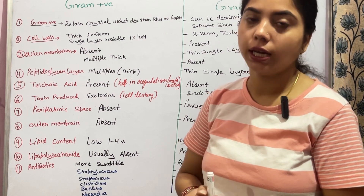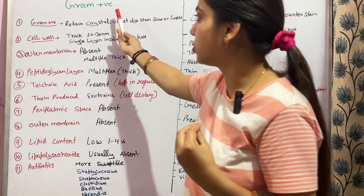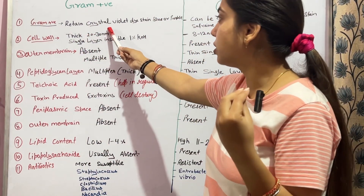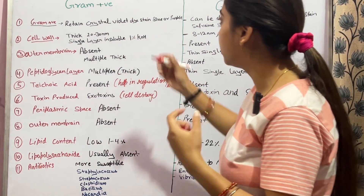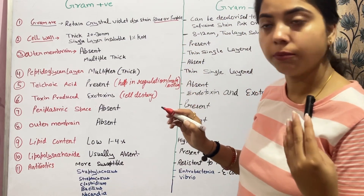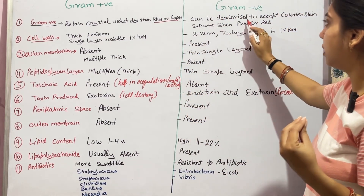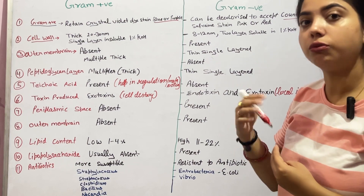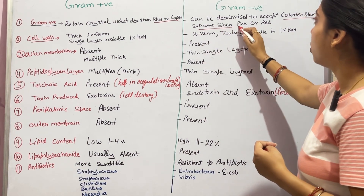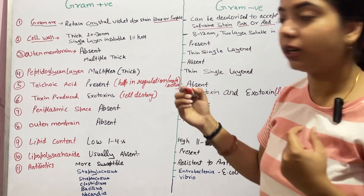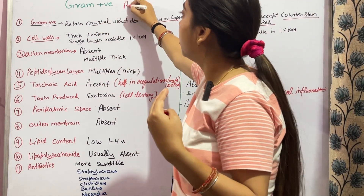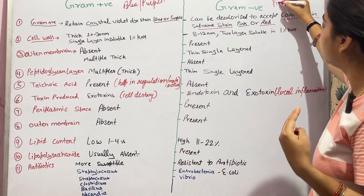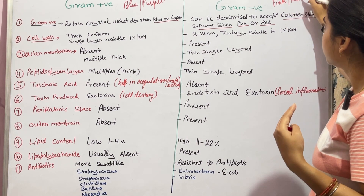Let's begin. Gram positive bacteria retain the gram stain color, which is blue or purple. Gram negative bacteria can be decolorized and will accept the counter stain, which is safranine stain, giving a pink or red color. So basically, gram positive bacteria appear blue or purple under the microscope, and gram negative bacteria appear pink or red.